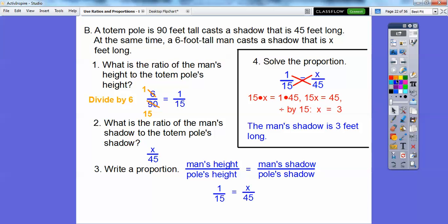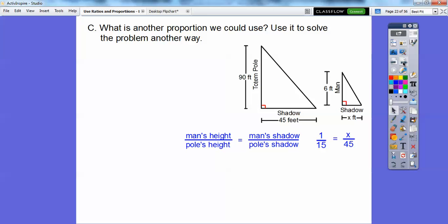Anyway, so the man's shadow is three feet tall. Okay, that's not the only proportion we can do. We can do another one here. So here's the way we just did it right here. 1 over 15 equals x over 45.